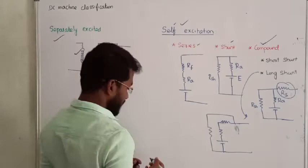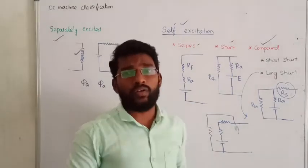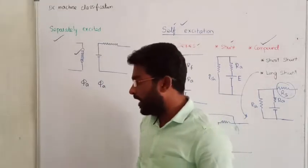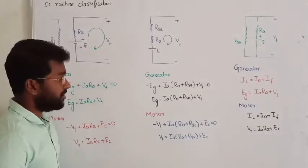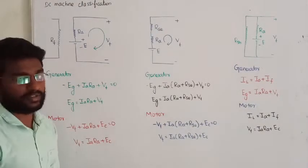This is the basic classification of DC machines. Now, how are we going to apply KVL? Let us analyze all divisions one by one and see how to analyze them.